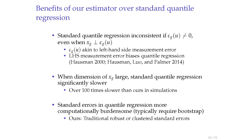What are the benefits over standard quantile regression? In principle, you can estimate beta by running quantile regression of Y on individual-level covariates Z and group-level covariates X directly. But quantile regression will be inconsistent if there is group-level unobservable epsilon, because epsilon acts like measurement error on the left-hand side variable, which we know from Hausman's work leads to inconsistency of quantile regression estimators.